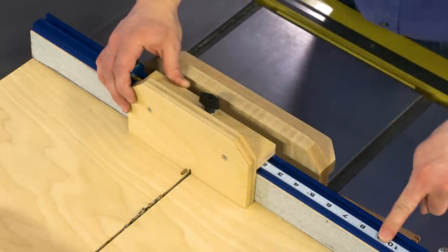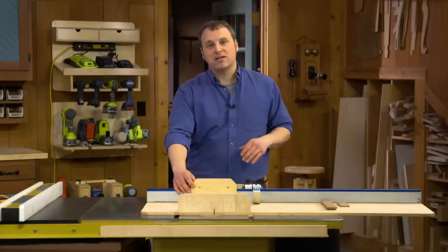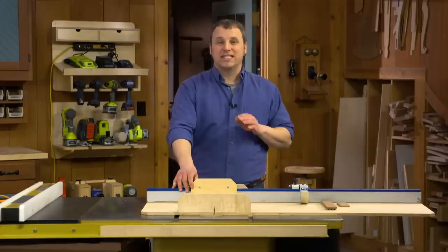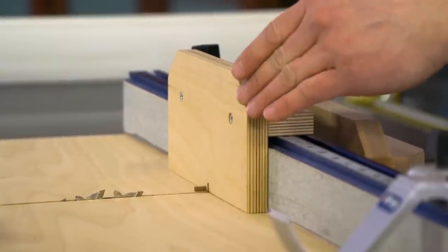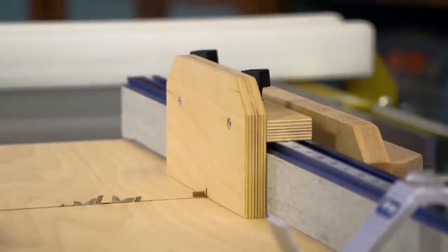Now my sled has a t-track built into the top of it that I use for attaching stop blocks and other accessories. This finger joint jig does the same thing and it's pretty simple to build. There's a plywood face and a plywood back, and that's what anchors with this knob onto the t-track.